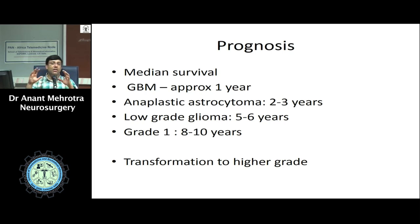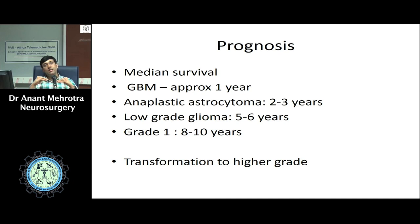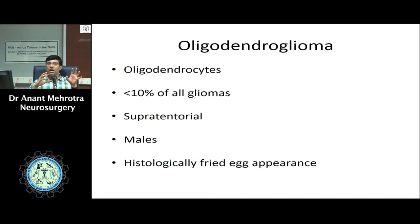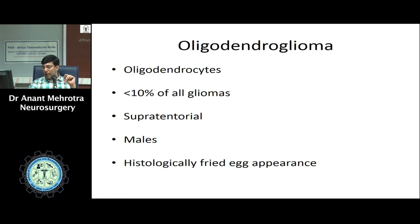Ependymomas arise from ependymal cells, which form the ventricular lining. These tumors are usually intraventricular but can be extraventricular. In children, they are classically seen in the infratentorial compartment, while in adults they are more common in the supratentorial compartment. They are classically grade 2 histology, making complete excision possible. However, higher-grade anaplastic ependymomas can be encountered and have poorer prognosis.